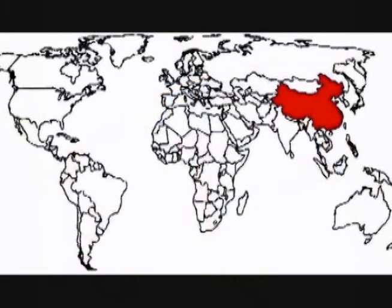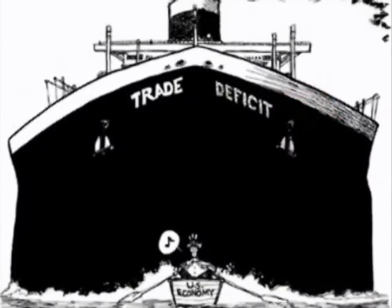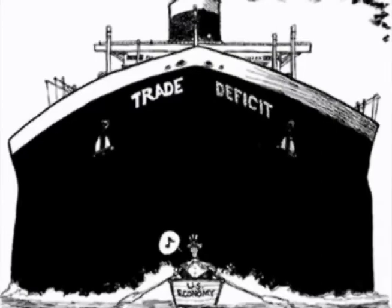If a country has a current account surplus, it is exporting more than it is importing. In other words, the country is providing resources to the rest of the world and is owed money in return, meaning the country is a net lender to the rest of the world. If a country has a current account deficit, it is importing more than it is exporting, meaning it is borrowing resources from other economies to meet its domestic consumption and investment requirements.